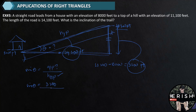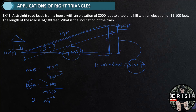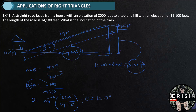The value of our opposite is 3,100 feet. Sine theta equals 3,100 over 14,100. To solve for angle theta, we transfer the sine to the right side of the equation, making it arcsine. Theta equals arcsine of 3,100 over 14,100. By calculating, angle theta is equal to 12.7 degrees — this is the answer for Example 3.